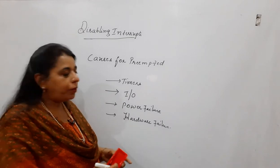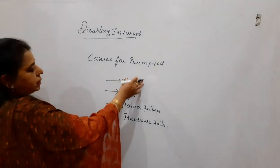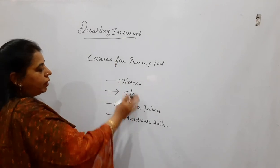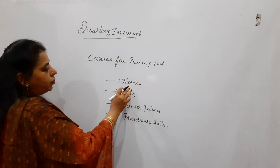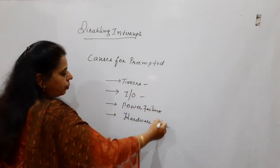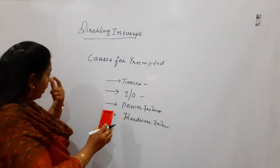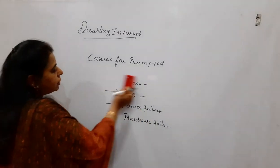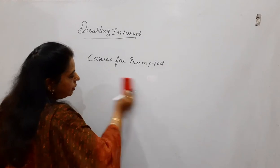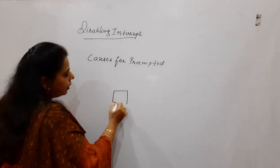Now, suppose if we try to mask all these things, that means you are disabling. You should not make the CPU face these timers, input-output, power failure or anything. Then what will happen is, the processes that are getting executed in the critical section will never get interrupted.